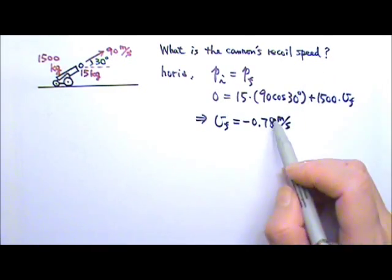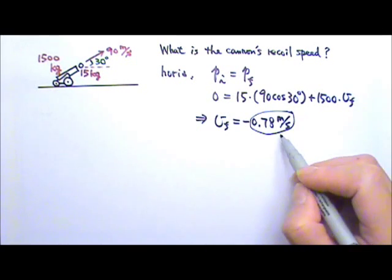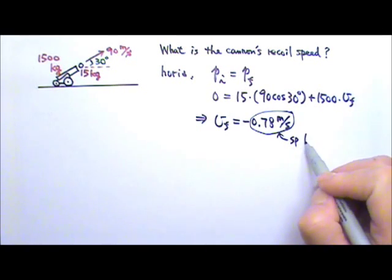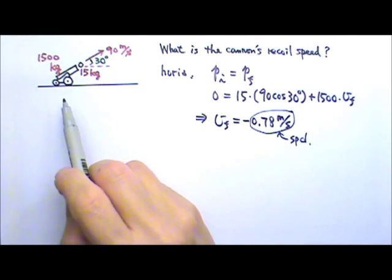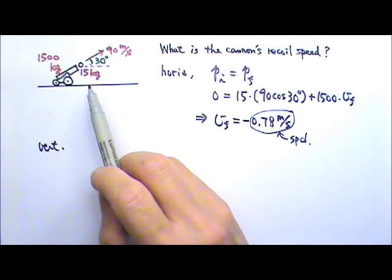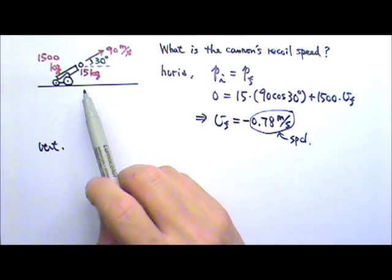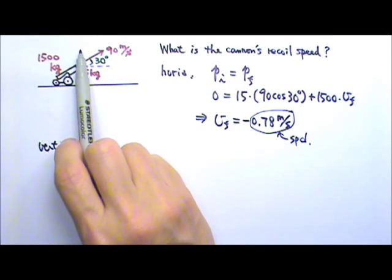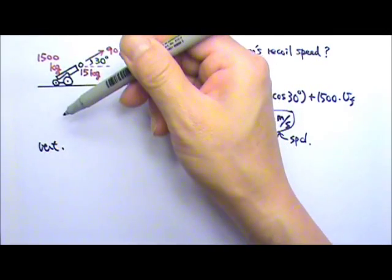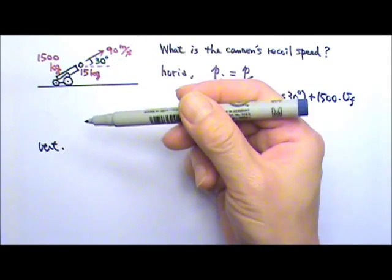That means the recoil speed is 0.78 meters per second. In the vertical direction, the momentum is not conserved because when the cannon shoots a cannonball with an upward component velocity, it pushes down on the ground harder than its weight, Mg.